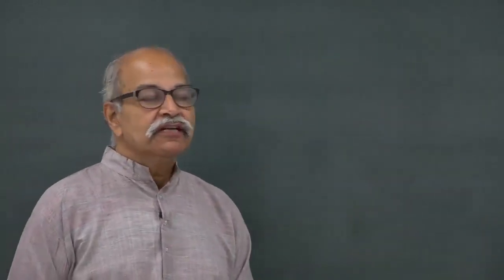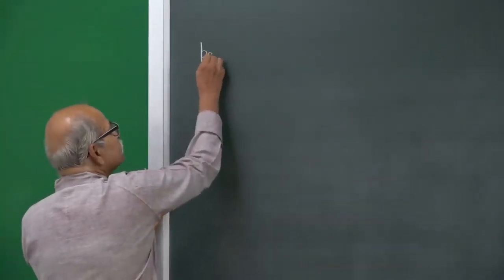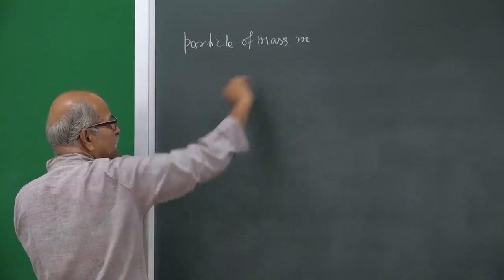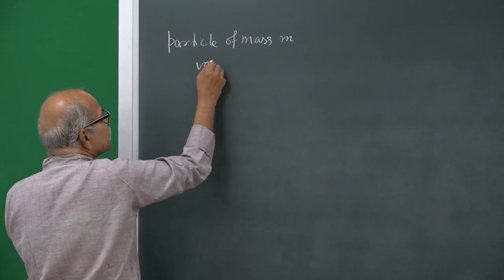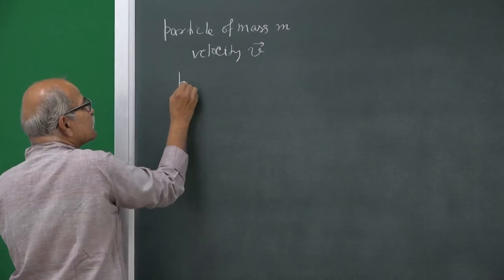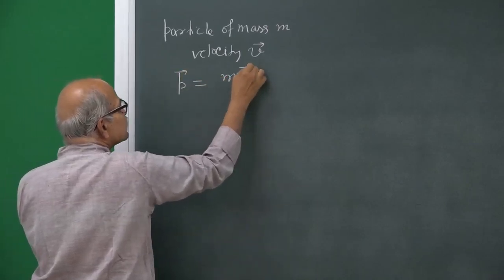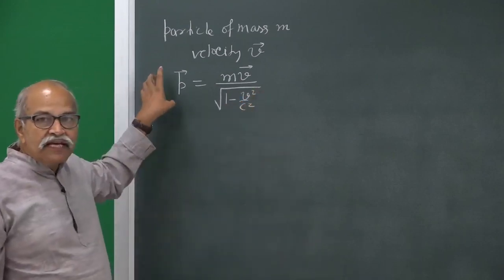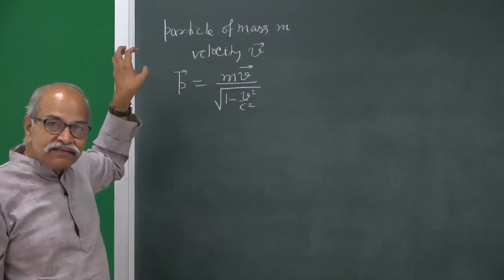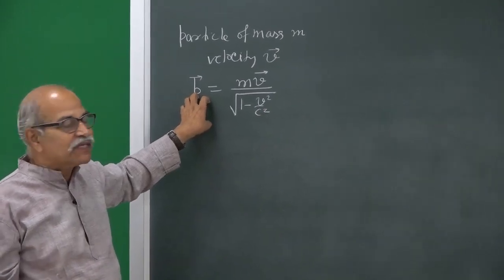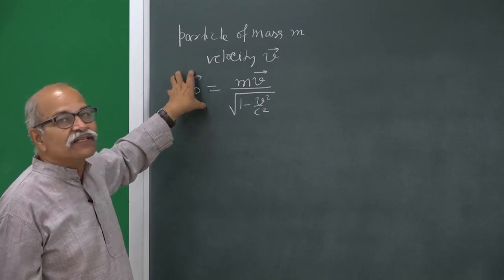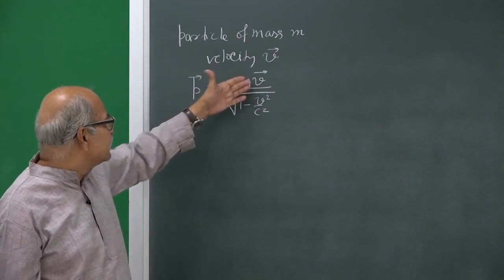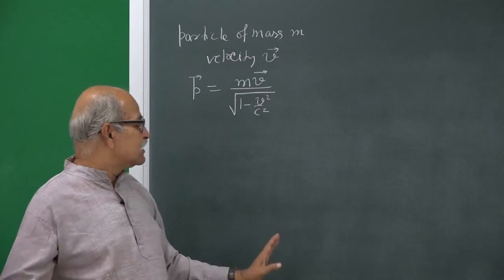If we have a particle of mass m going with velocity v, and we define a quantity p which is mass times velocity divided by the square root of 1 minus v squared by c squared, then this quantity is conserved in collisions and situations where no external forces act. This can act as the linear momentum. This redefinition works very well in all conditions and therefore we stick to it.